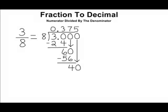8 can be divided into 40 a total of 5 times. And 5 times 8 is exactly 40 leaving us with no remainder. So we would say 3/8 written as a decimal is exactly 0.375 thousandths.